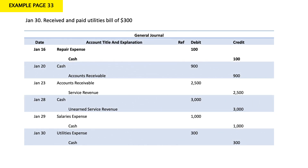January 30: received and paid utilities bill of $300. Utilities bill is utilities expense — expenses such as electricity, water, heat, internet, or telephone that occur regularly. We paid, so my cash decreased by $300 and my expenses increased by $300. So: debit utilities expense and credit cash by $300.